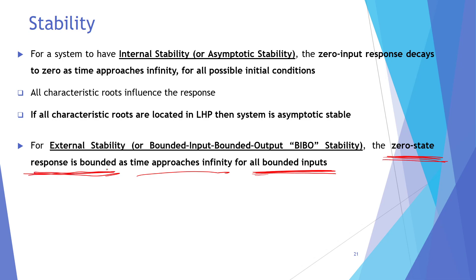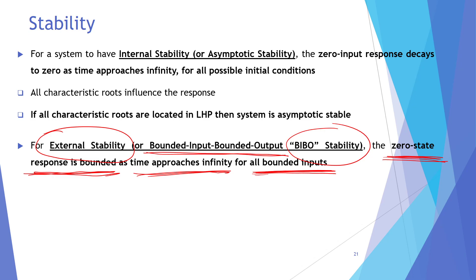We can say that the system is externally stable. BIBO stands for Bounded Input Bounded Output. The zero state response must be bounded or decaying for the system to have external stability or BIBO stability.